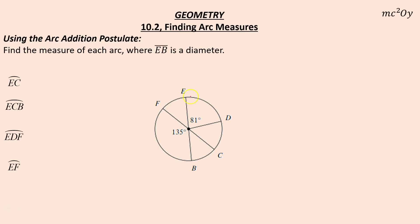Find the measure of each arc where EB is the diameter. I like to figure out all the angle measures first. I notice this is a straight angle, so 135 plus angle CPB equals 180 degrees — what adds to 135 to make 180? That's 45 degrees. Also notice vertical angles are congruent, so this 45 transfers up here and is also 45. We can say the same about 135: this is 135, which means 81 plus what equals 135? That would be 54 degrees. Now we have all of our angle measures.